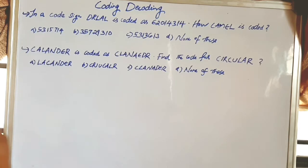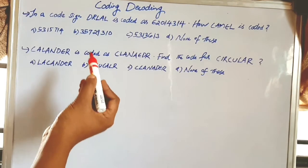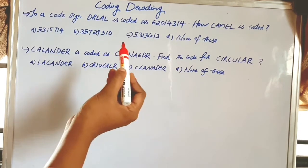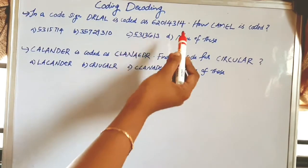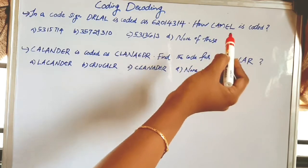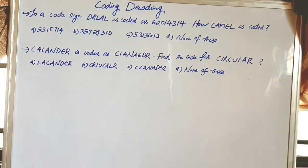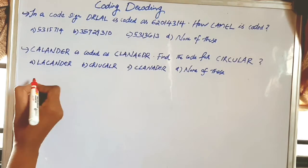First question: the word DRLAL is coded as a number. How is CAMEL coded? How do we solve these questions?